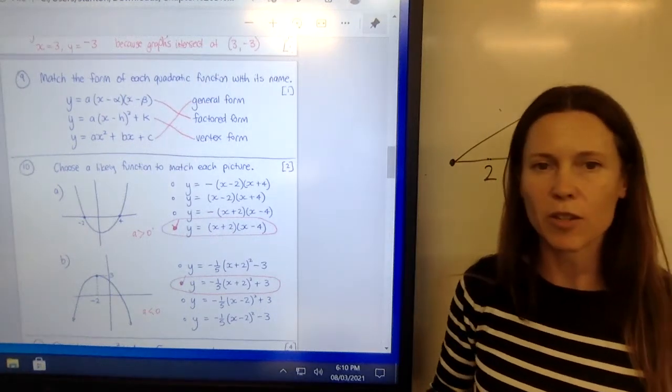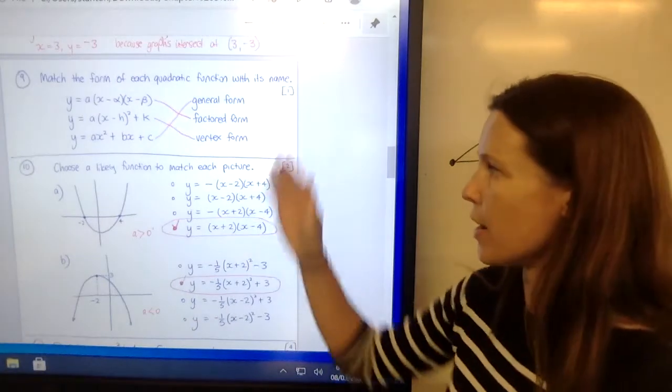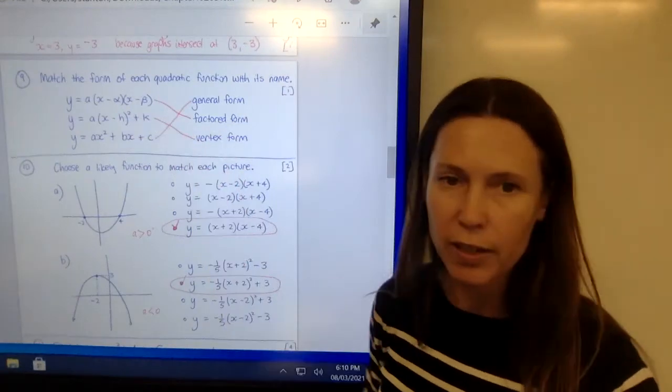Okay, question 9 is just getting you to look at each form that we've learned for a quadratic function and match it to its name. So obviously the factored form, it's factorized.